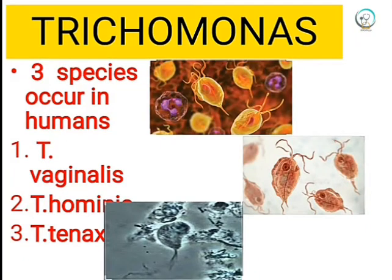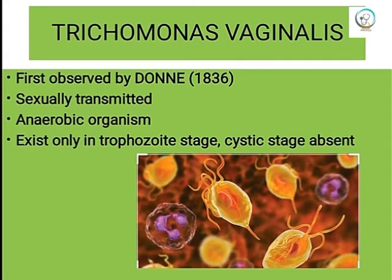The genus Trichomonas consists of three species which occur in humans: Trichomonas vaginalis, Trichomonas hominis, and Trichomonas tenax. Trichomonas vaginalis is the causative agent of trichomoniasis, a sexually transmitted disease. The other two species are harmless organisms.